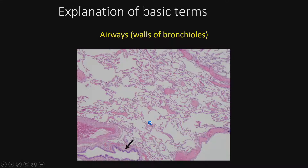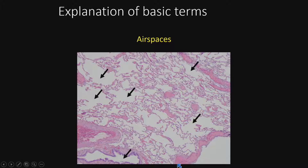Let's start with some basics in lung pathology, since most of us don't look at lung pathology on a daily basis. Airways and airspaces are two different things. Airways are bronchi and bronchioles — the airway you see here lacks cartilage, so it's a bronchiole. The airspaces are the spaces within the alveoli. That's a useful distinction: those are the airspaces, and the one at bottom left is an airway.